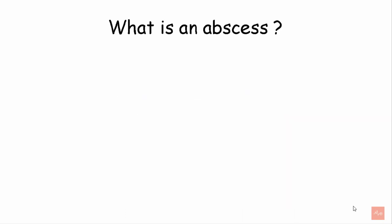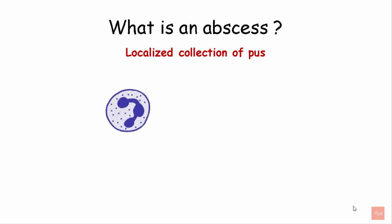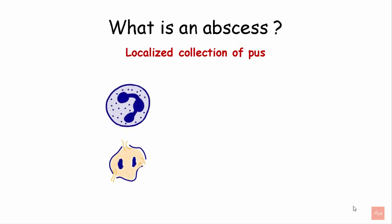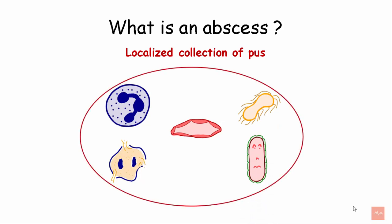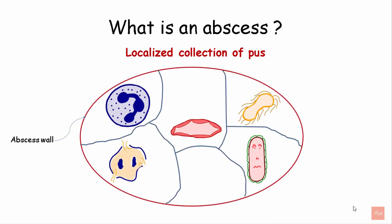What is an abscess? An abscess is a localized collection of pus. It consists of living and degenerated polymorphonuclear leukocytes, cells of the tissues, and living and dead bacteria. These are enclosed within a capsule called the abscess wall, which is divided into many loculations. An abscess is the reaction of the body to bacterial infection and it limits the spread of infection.